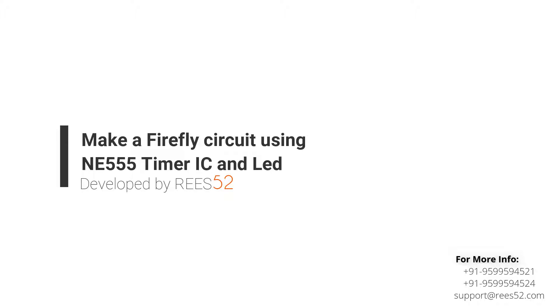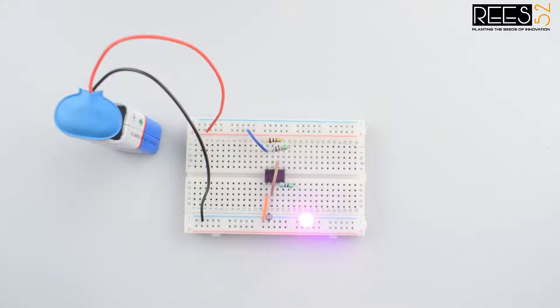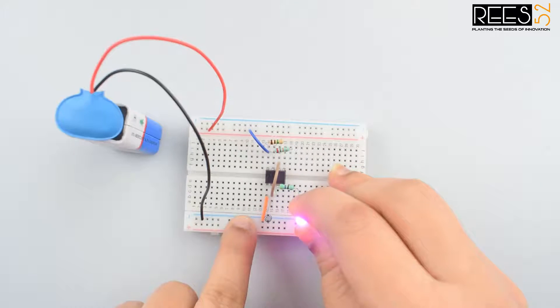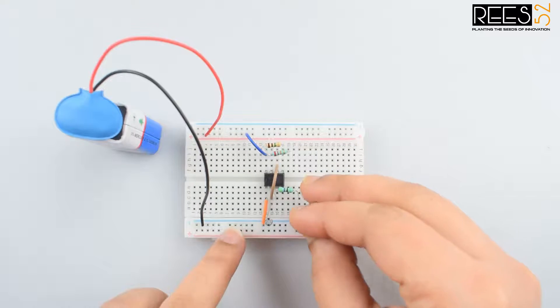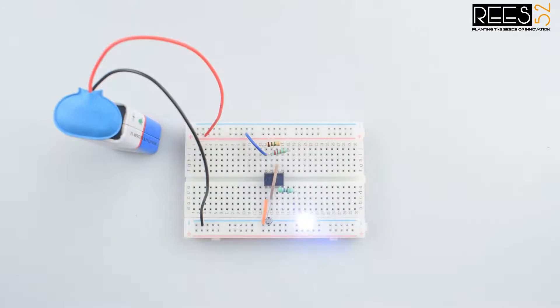Hello everyone, welcome to our channel REES 52. In today's tutorial we will make a firefly circuit using an NE555 timer IC. In this project, the LED will glow after every fixed amount of time like fireflies do, and the connections are quite easy.